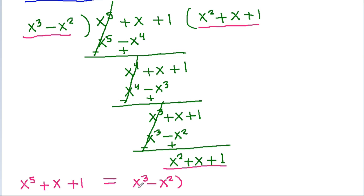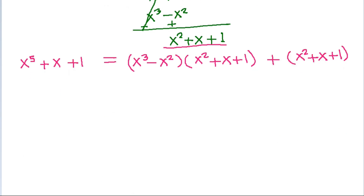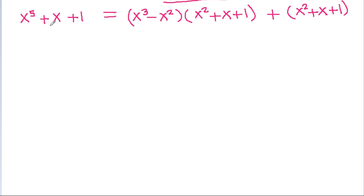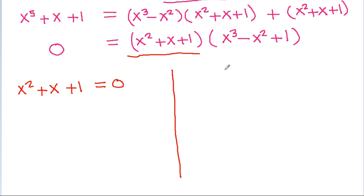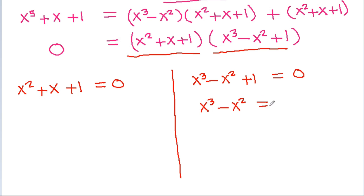So x power 5 plus x plus 1 equals x cube minus x square times x square plus x plus 1 plus x square plus x plus 1, which equals 0. We can take x square plus x plus 1 common, giving x cube minus x square plus 1 times x square plus x plus 1 equals 0. So either x square plus x plus 1 equals 0, or x cube minus x square plus 1 equals 0. From here, x cube minus x square is equal to minus 1.